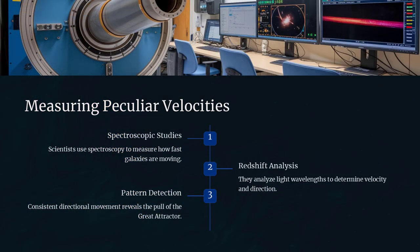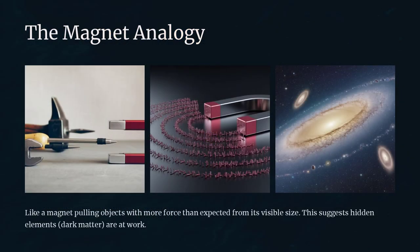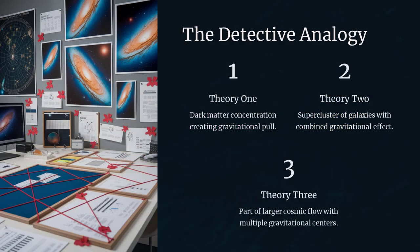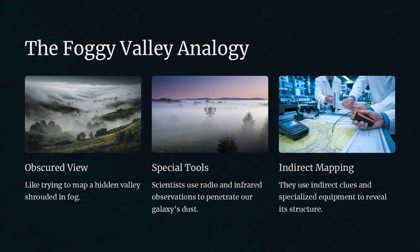One scientifically rigorous explanation is that the Great Attractor represents an enormous concentration of mass likely composed of galaxies, clusters, and perhaps dark matter. In regions where mass is densely packed, gravity can significantly influence the motion of nearby galaxies.